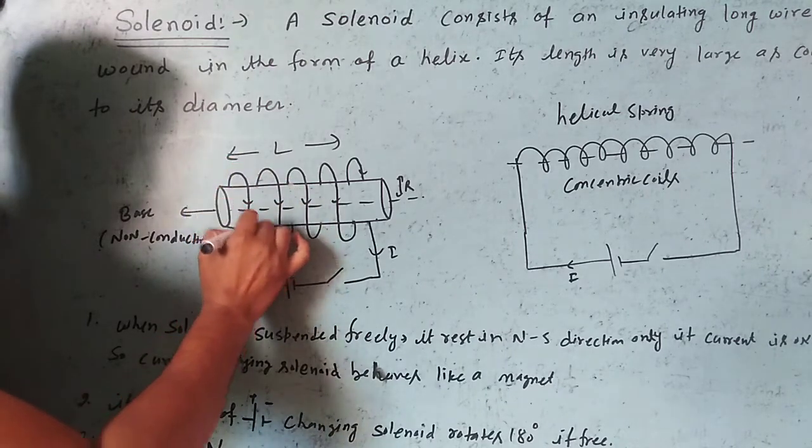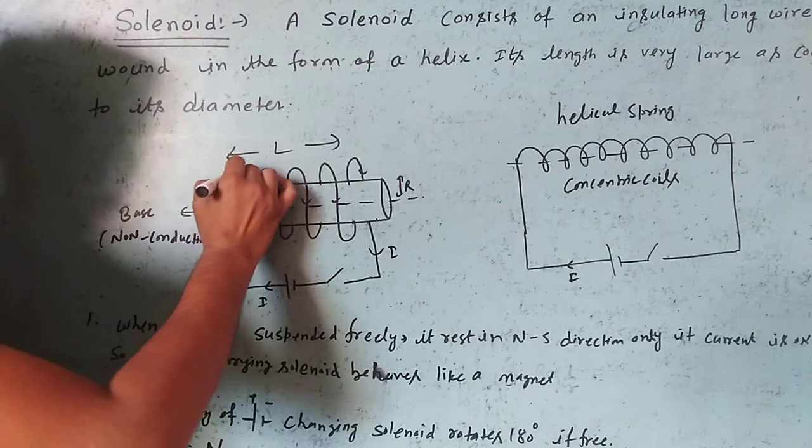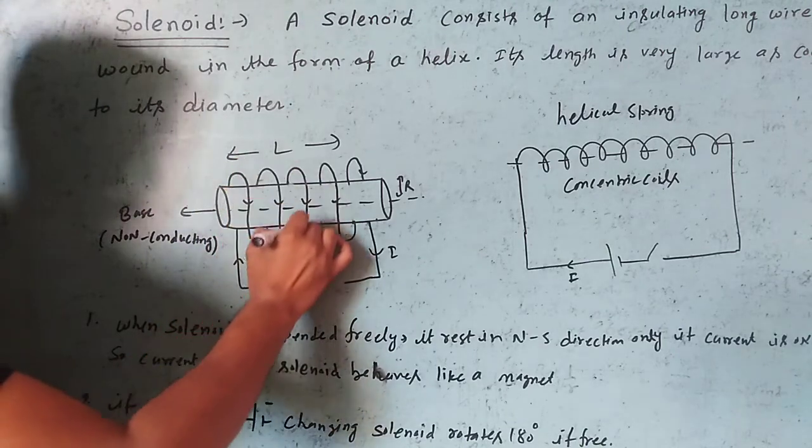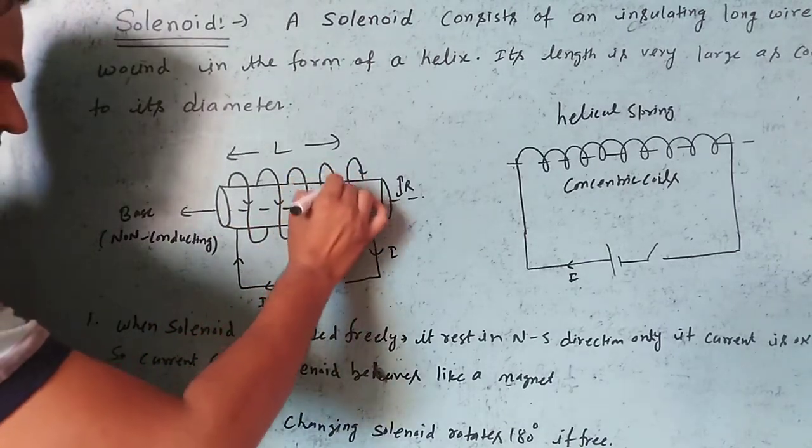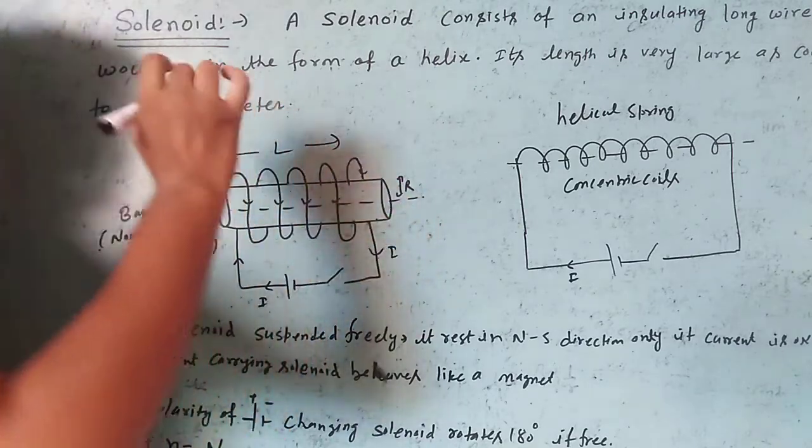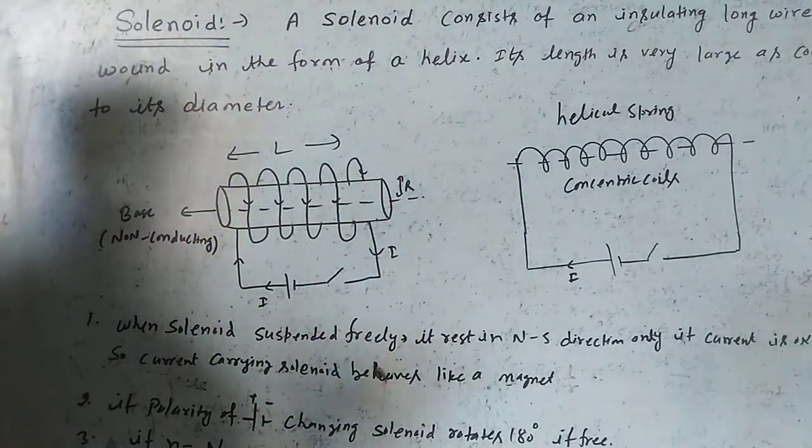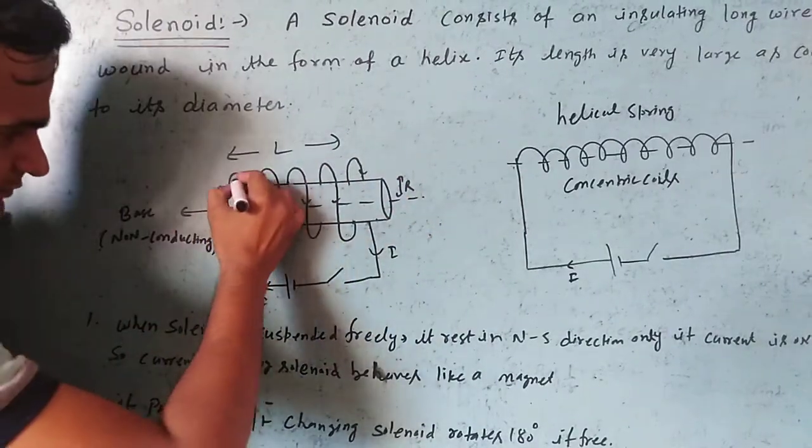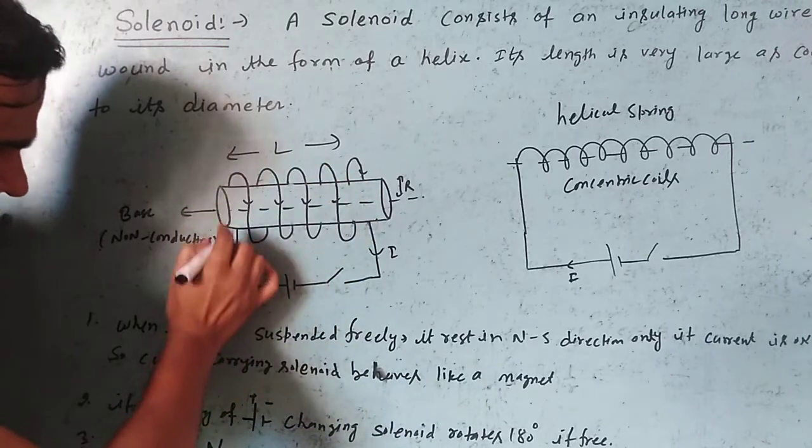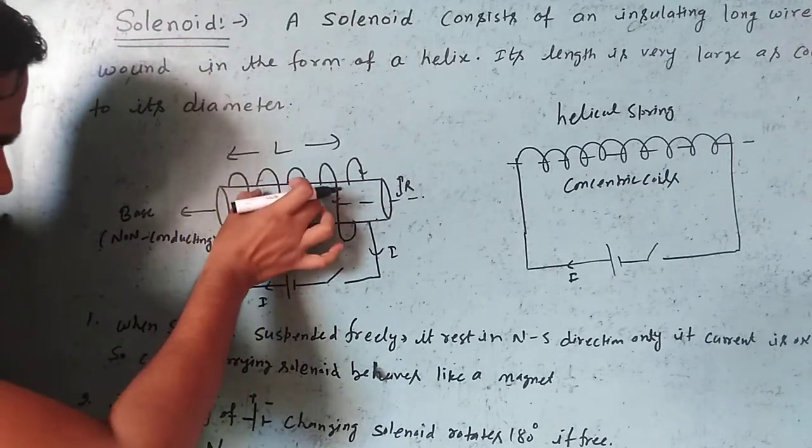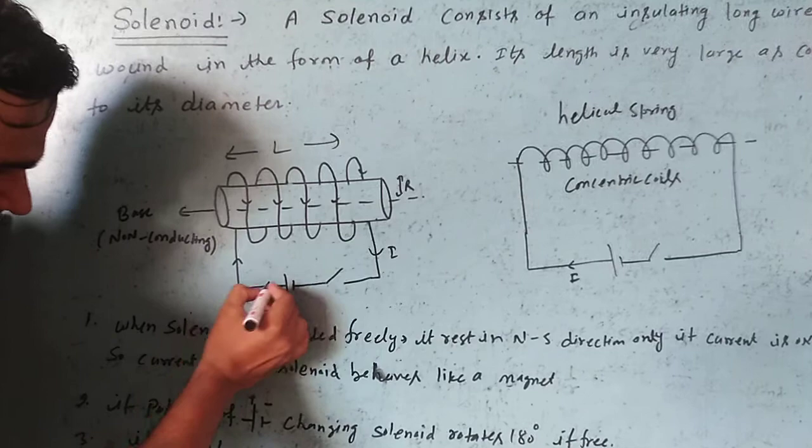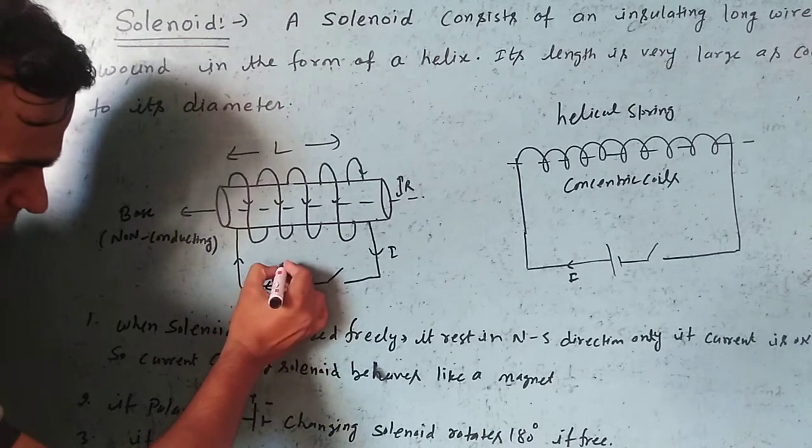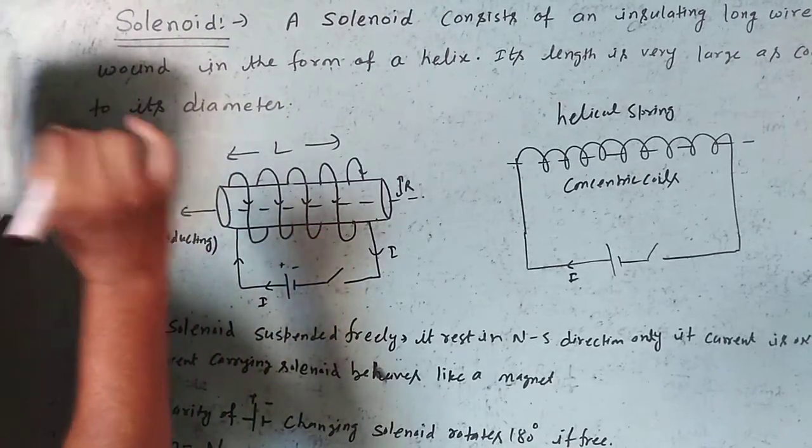The insulating long wire is wound in the form of a helix. These wires are connected to a battery with positive and negative electrodes and a key.